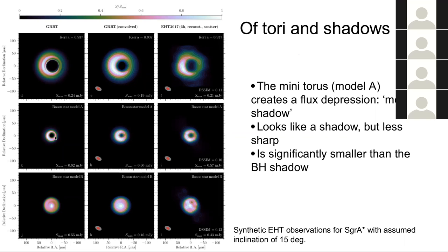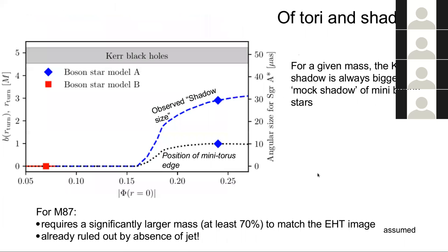And this is model B where we are accreting all the way to the center. Obviously that would not be mistaken for something like that, even with the EHT beam. So it looks like a shadow, but it's less sharp. We don't really have resolution to really say something about that sharpness at that level yet. But it is somewhat smaller. And trying to make this a bit more systematic. If you observe that the inner edge of that torus is given by the maximum of the geodesic rotation law.